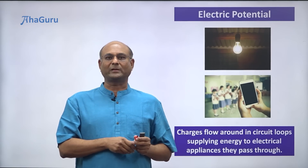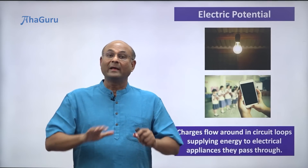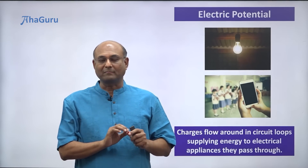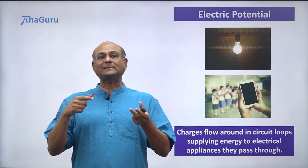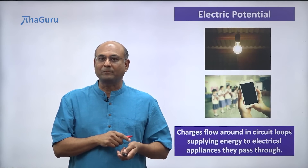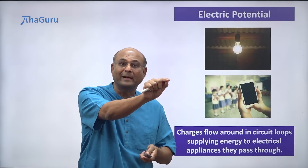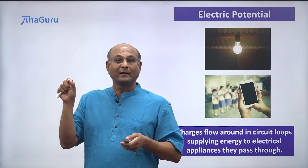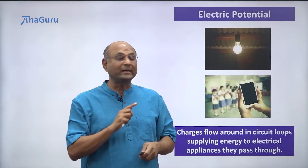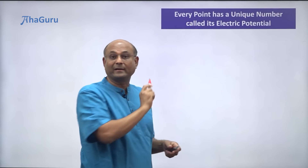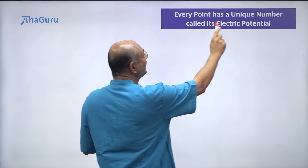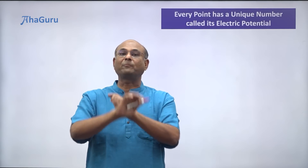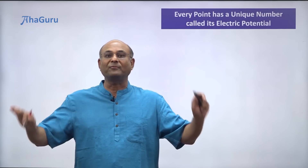What is this idea of electric potential? It's a very simple idea. Every point in the universe has an electrical number, and this electrical number we call its electric potential. This point has a number, that point has a different number — all around us, every point has a unique number. This statement — every point has a unique electrical number called its electric potential — is probably the most important statement in the whole of electricity.